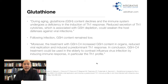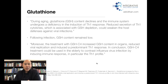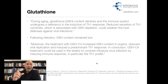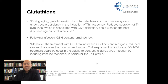During aging, glutathione content declines — production actually declines as a normal part of aging, giving us less and less glutathione production capacity. The immune system undergoes a deficiency in induction of T-helper-1 response. Reduced secretion of T-helper-1 cytokines, associated with glutathione depletion, will weaken the host's defense against viral infection. Glutathione helps stimulate T-helper-1 natural killer cells so you can fight viruses better. Following infection, glutathione content remains low, making a case for taking glutathione as a supplement. Moreover, glutathione treatment increased glutathione content in organs, reduced viral replication, and induced a predominant TH1 response — a 2019 animal study shows glutathione treatment can contrast influenza virus infection by inducing a TH1 immune profile.